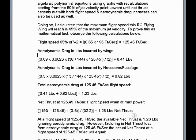Net thrust at 125.45 feet per second flight speed when at max power is equal to: jet velocity of 193 feet per second subtract 125.45, times 0.6 pounds per second mass airflow. This entire calculation divided by gravitational acceleration of 32.2 feet per second squared will equal 1.26 pounds net thrust. So at a flight speed of 125.45 feet per second, the available net thrust is 1.26 pounds, ignoring aerodynamic drag.